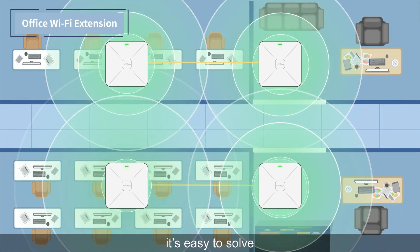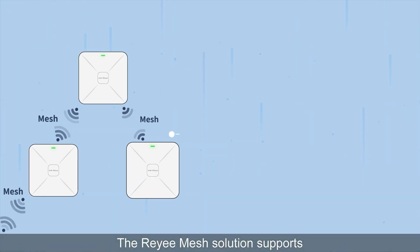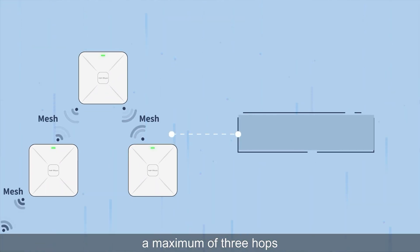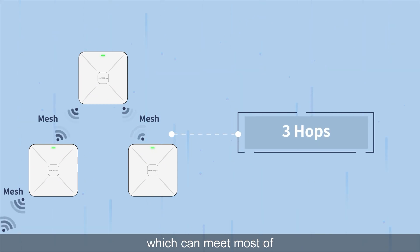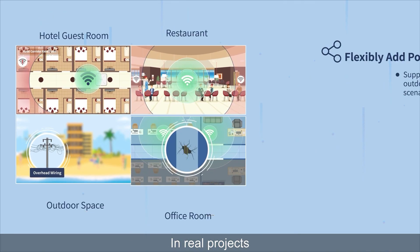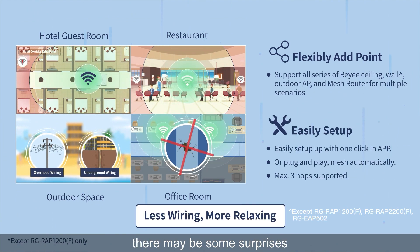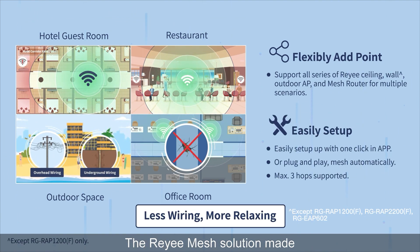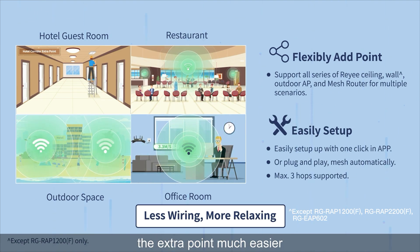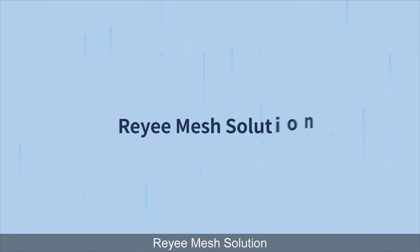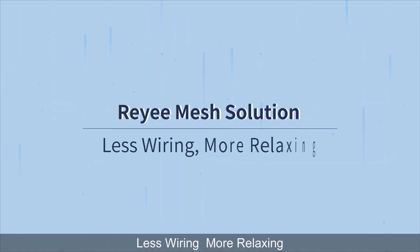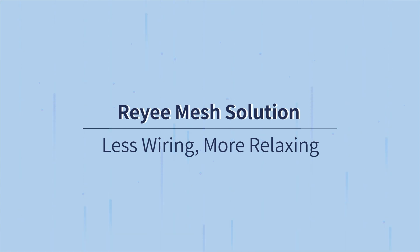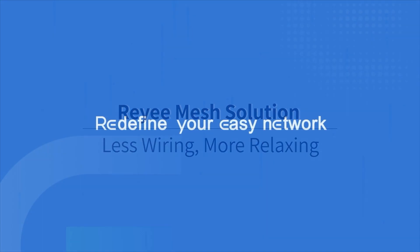The Ray-E Mesh solution supports a maximum of three hops, which can meet most point-complement scenarios in real projects. The Ray-E Mesh solution makes adding extra access points much easier. Ray-E Mesh: less wiring, more relaxing.